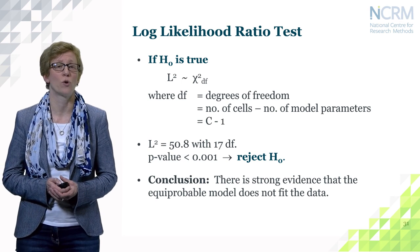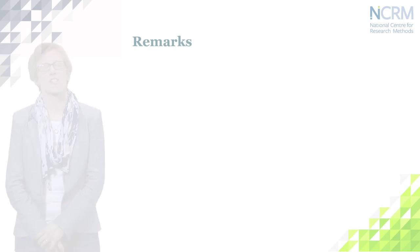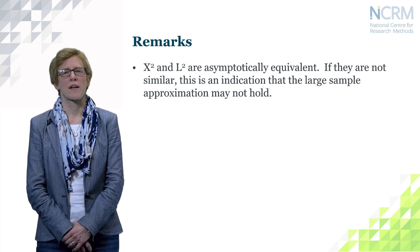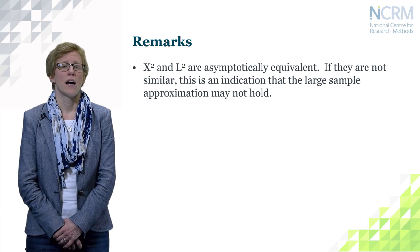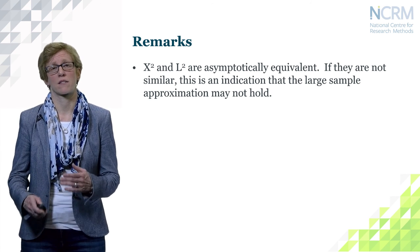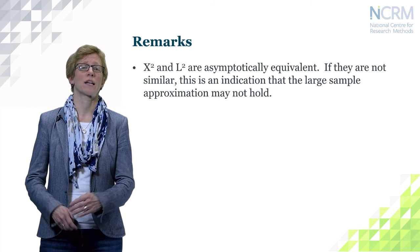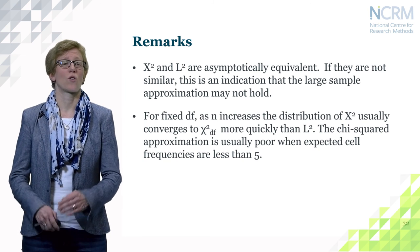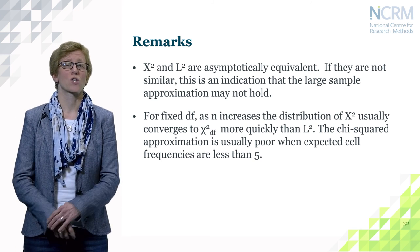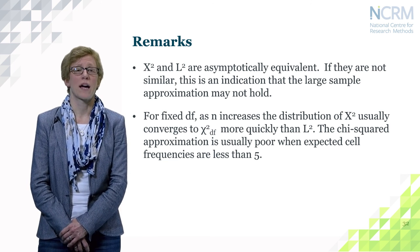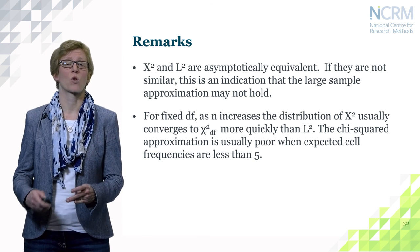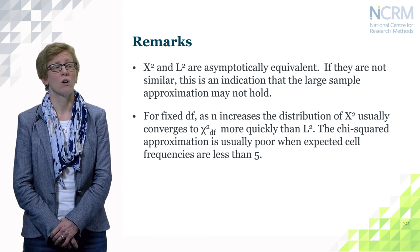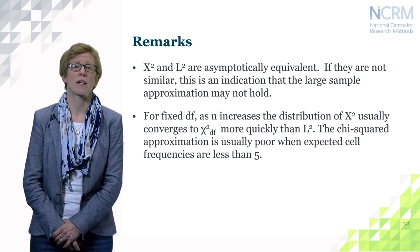A couple of remarks about the Pearson chi-square test and the log likelihood ratio test: they are asymptotically equivalent, relying on large samples, and you would expect them to give the same or very similar results. If they differ notably, this may indicate that the large sample approximation does not hold. For fixed degrees of freedom, as n increases, the distribution of the Pearson chi-square test converges to the chi-square distribution more quickly than the log likelihood ratio test. Also note that the chi-square approximation is generally poor if any expected cell counts are less than 5.